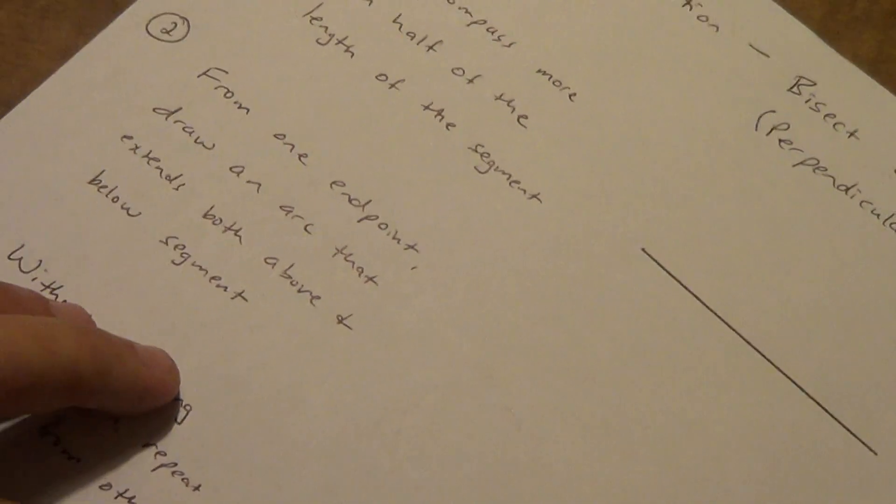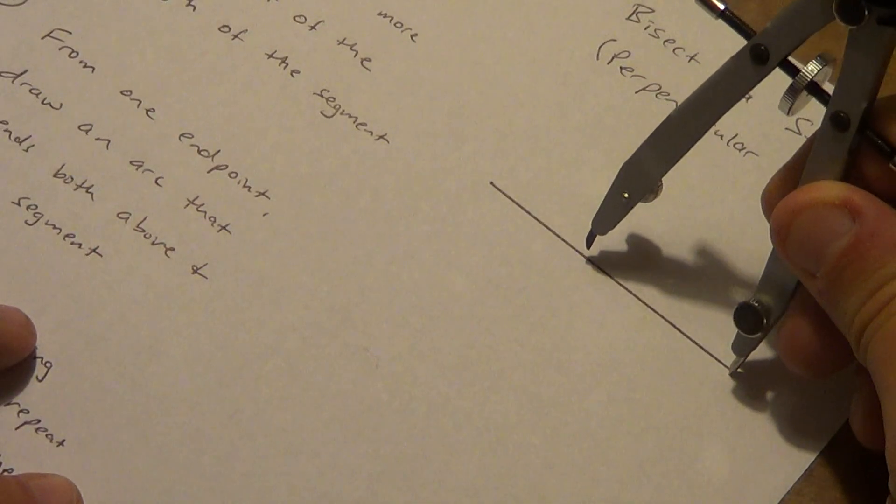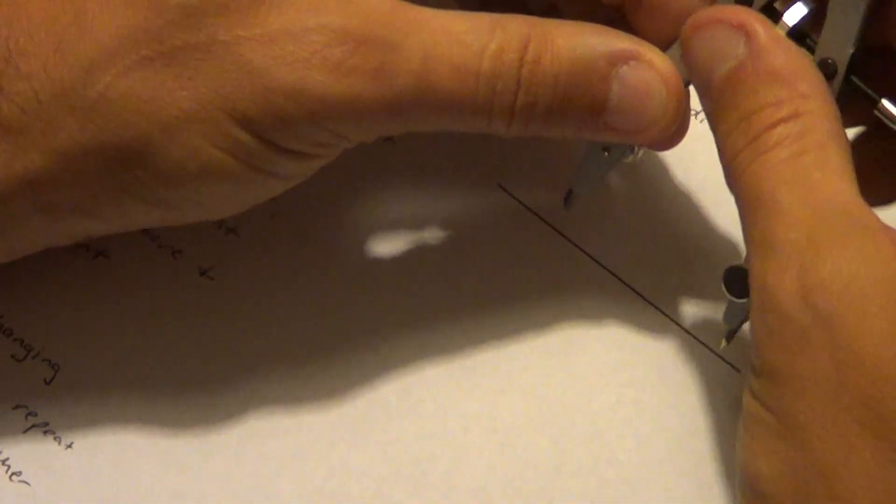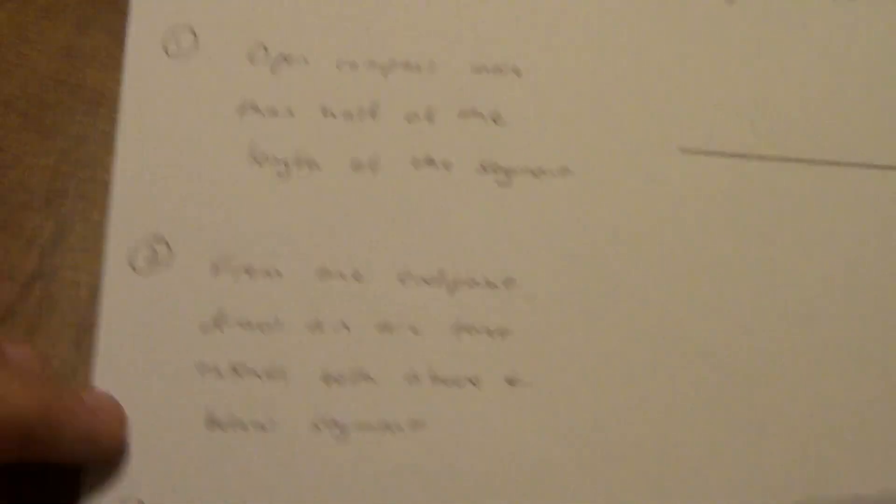So if you're not sure if it's more than half, just go a little wider. I've got my compass open right here. That looks like it's probably a little bit more than half, but I'm not totally sure. So I'm going to go just a little bit wider with it. Now that is definitely more than half. So that's step one.